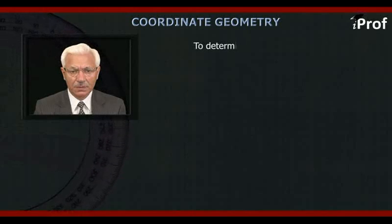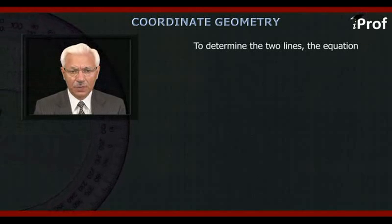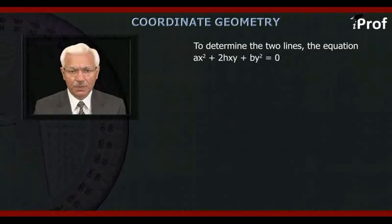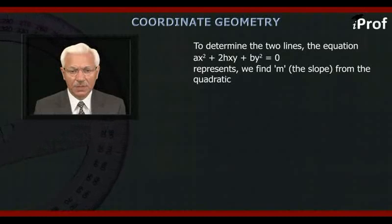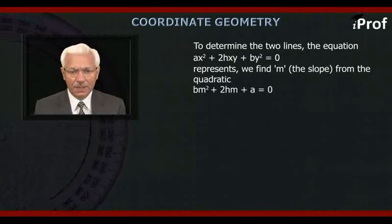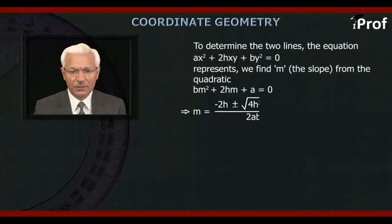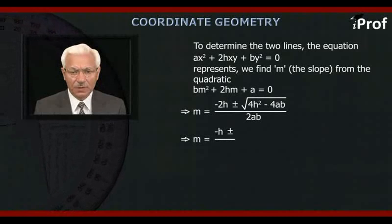To determine the two lines that the equation ax² + 2hxy + by² = 0 represents, we find m, the slope, from the quadratic bm² + 2hm + a = 0. That gives m equal to minus 2h ± √(4h² - 4ab) divided by 2b, or m = (−h ± √(h² − ab)) / b.